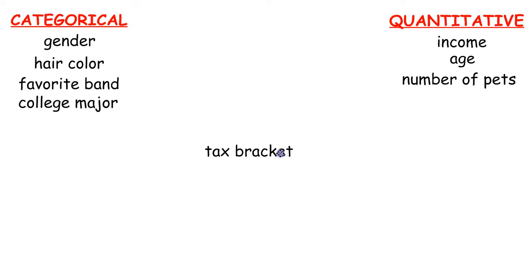Tax bracket. Tax bracket, for those of you that aren't familiar with how tax brackets work, it's a range of incomes. So let's say you make between $10,000 and $20,000 a year. That might be one tax bracket. Or $20,000 to $40,000 might be another tax bracket. And so the government sets up these different ranges. And they determine how much they're going to tax you based on which tax bracket you fall into.